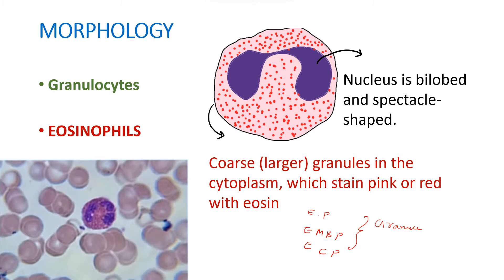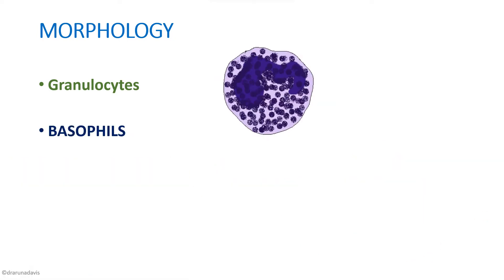In a peripheral smear, the eosinophil will clearly show coarse orange-red granules in the cytoplasm, and you can see the nucleus is almost bilobed. Next we will see about basophils.